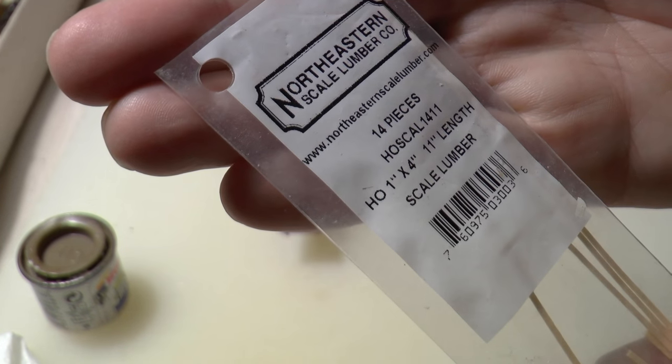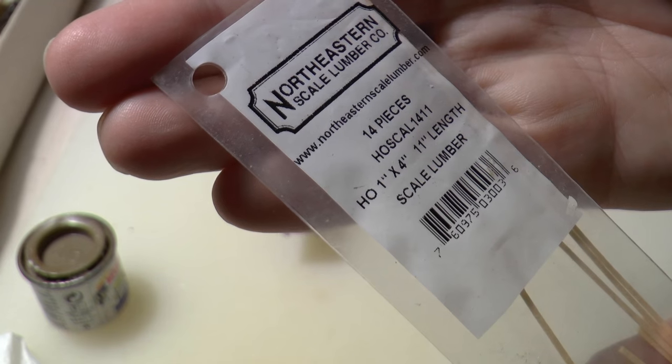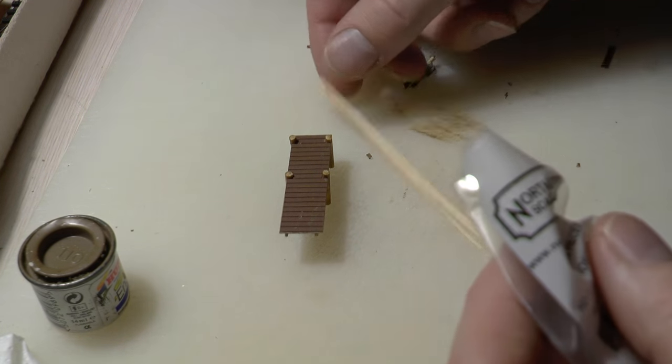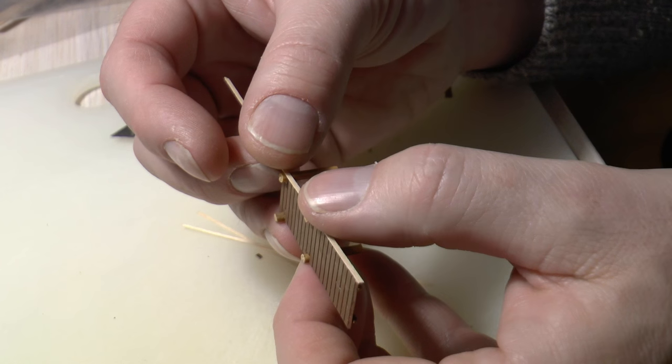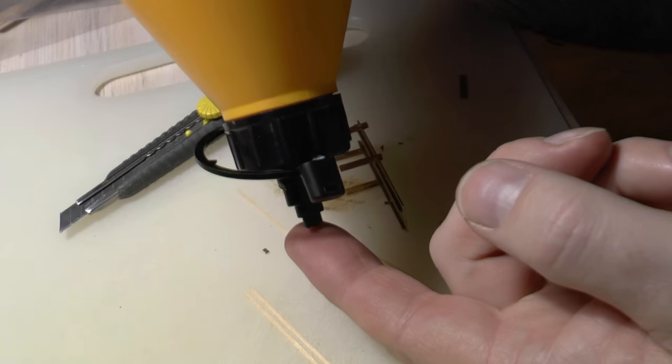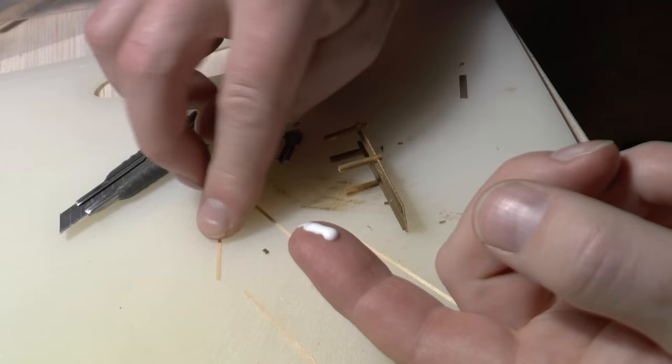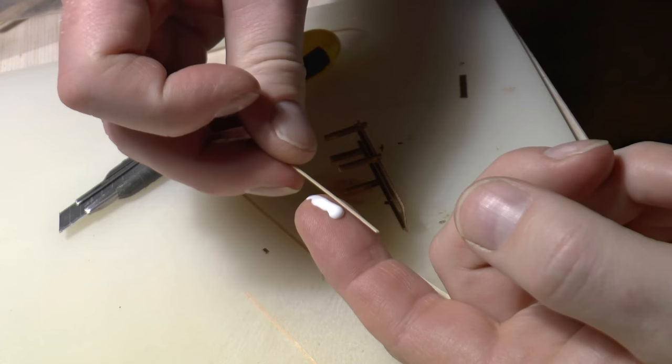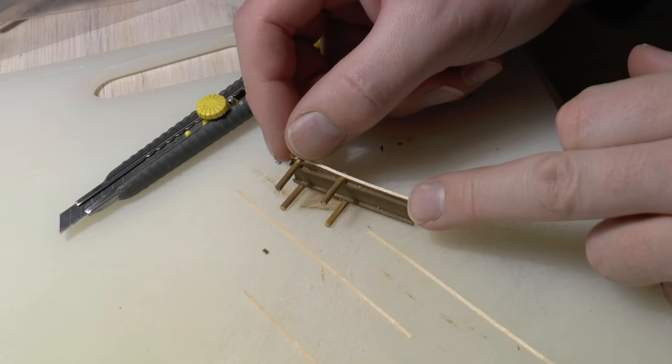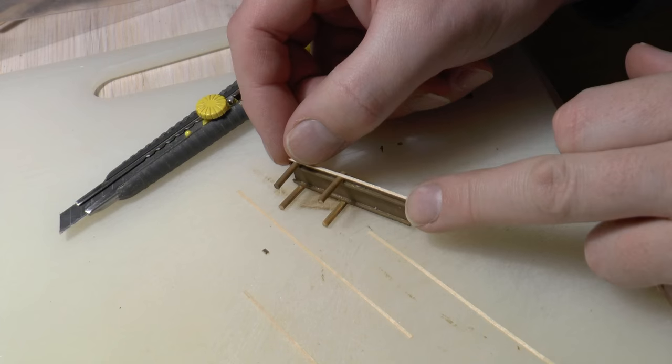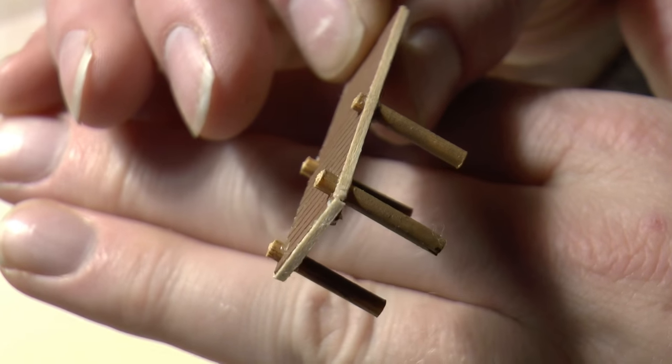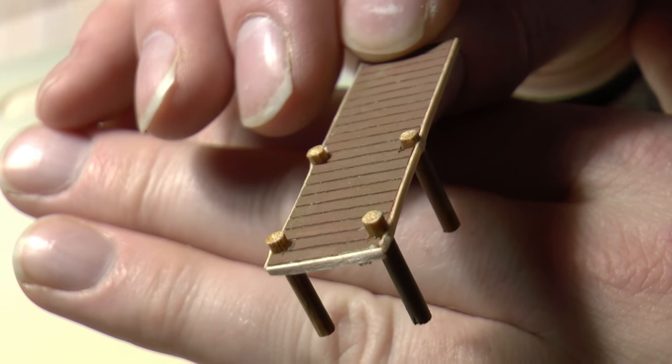I thought it was convenient because they were ready-made, so I just check the length of these and cut them to length and glue them in place. And here is what it looks like with the planking in place. Now we just have those other planking still to go.